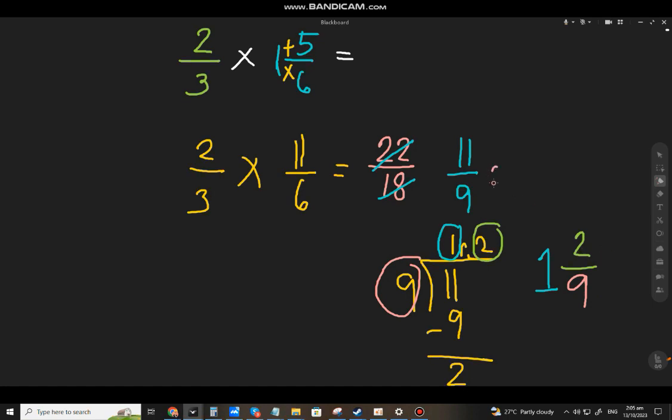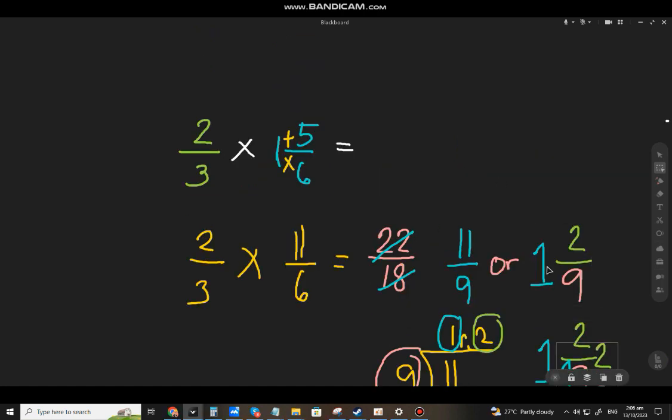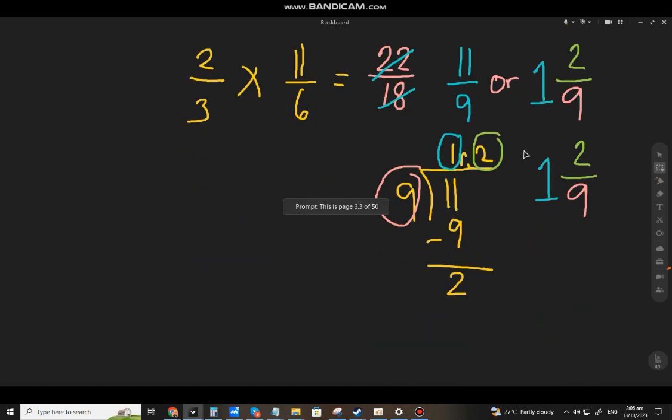Ano natin siya gagawin ang mixed number? Yung quotient mo, yan, yan na yung whole number. Yung remainder, that will be the numerator. At yung divisor natin, that will be the denominator. So, 1 and 2/9.